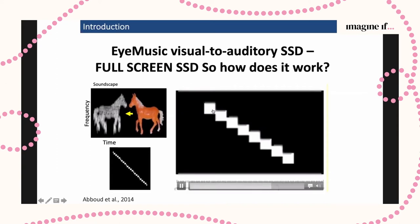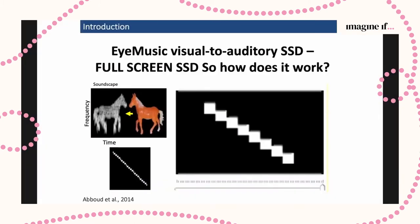Let me give you one small example. This is how a diagonal line will sound — a high scan from left to right. A smile will be something like this, and a sad face will be something like this. The music draws the scene and the blind person imagines what's in the surroundings.